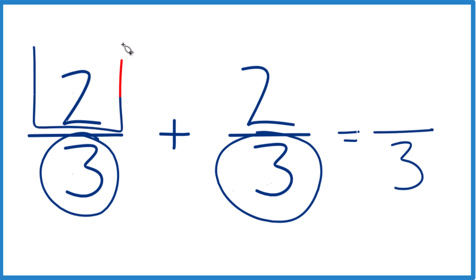For the numerator, we just add those together. Since we have the same denominators, we can just add the numerators. 2 plus 2 is 4, and we end up with 2 thirds plus 2 thirds. That equals 4 thirds.